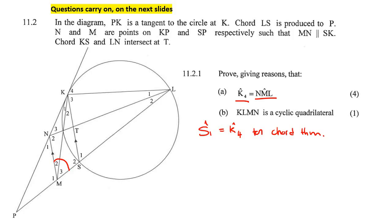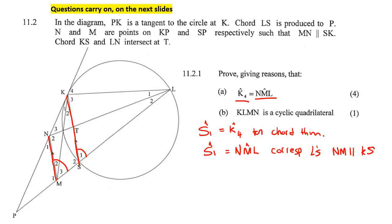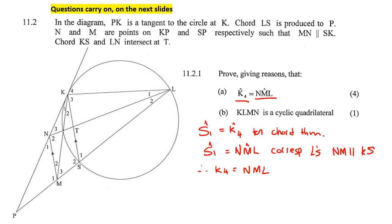Now we know that S1 equals K4. If you look at these two parallel lines, we know that this angle would be the same as this angle. So we can say S1 is equal to NML because of corresponding angles, and that's because NM is parallel to KS. We've done it — K4 equals S1, and S1 equals NML, therefore K4 must equal NML.